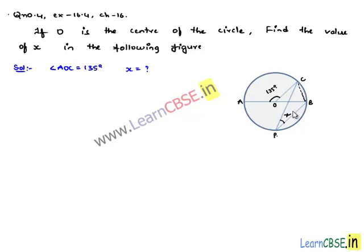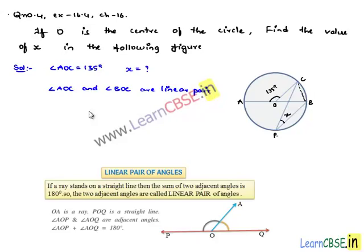In order to find the value of x, consider on diameter AB, angle AOC and angle BOC are the angles that form linear pair. We know that sum of angles that form linear pair is equal to 180 degrees.